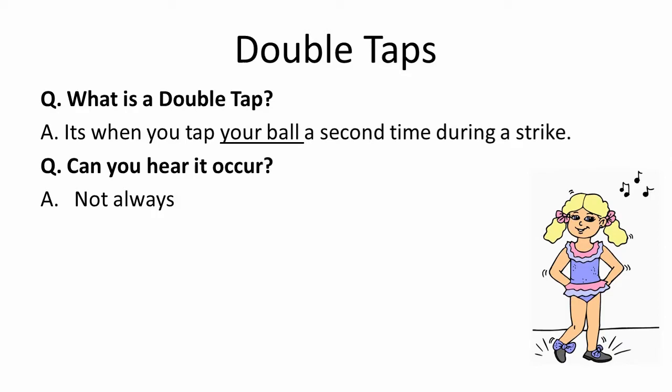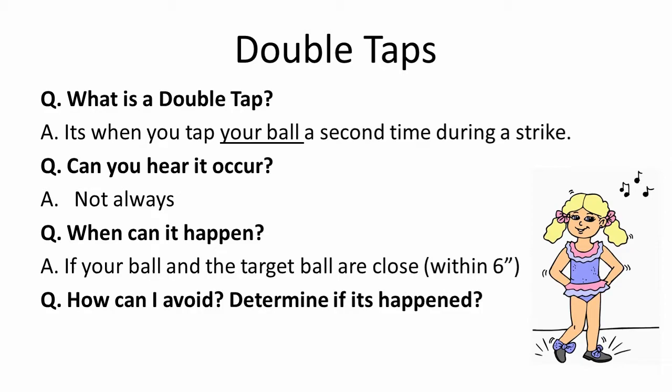A player is always at risk of doing a double tap if their ball and the target ball are within six inches of each other. This video explains what a double tap is, how to avoid one, and the actions if one does occur.